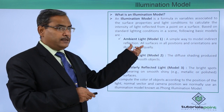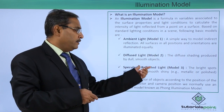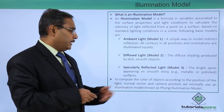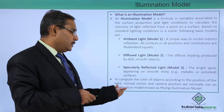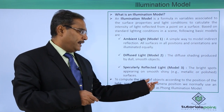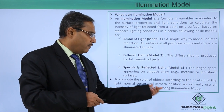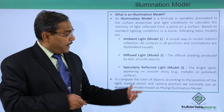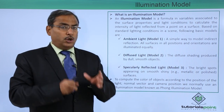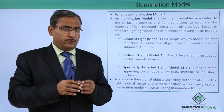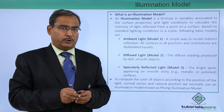So we have ambient light, diffuse light, and specularly reflected light. To compute the color of objects according to the position of the light, normal vector, and the camera position, we normally use an illumination model known as the Phong illumination model. In the next video, we will be discussing the Phong illumination model in more detail. In this video, we got the idea of what illumination models are and the different types of models.